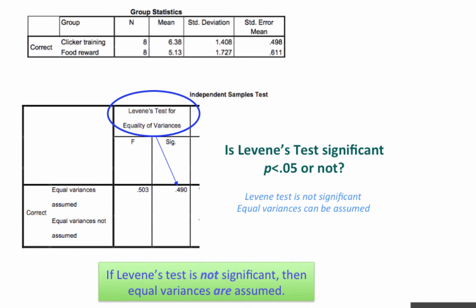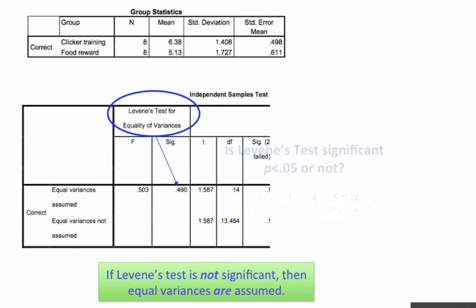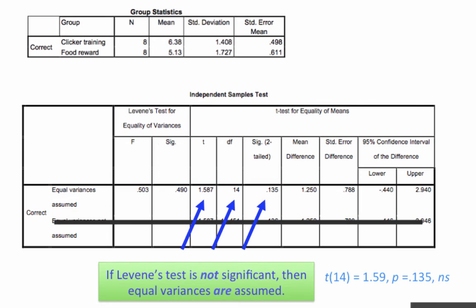Now let's look at the rest of this independent samples t-test box. There are three boxes that we are interested in, and they're on the top row, the row that says equal variances assumed. I've put a line through equal variances not assumed so that we won't be distracted by those numbers. That second line, equal variances not assumed, is the line from which we would have to interpret our t-test if Levene's test had been significant.